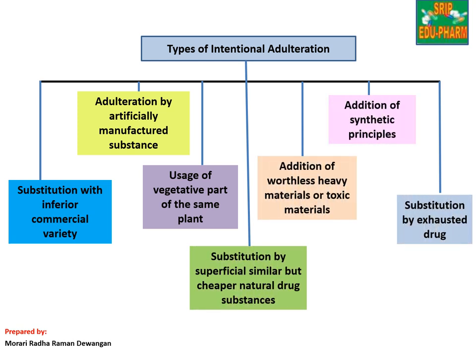Types of intentional adulteration. The reasons and methods of intentional adulteration include: first, substitution with inferior commercial variety; second, adulteration by artificially manufactured substances; third, usage of vegetative parts of the same plant; fourth, substitution by superficially similar but cheaper natural drug substances; fifth, addition of worthless heavy material or toxic material; sixth, addition of synthetic principle.